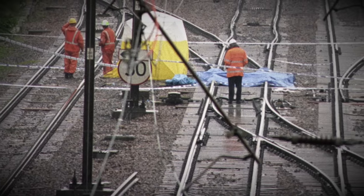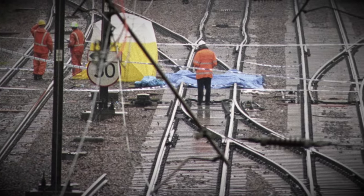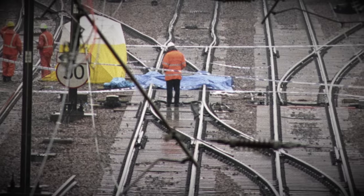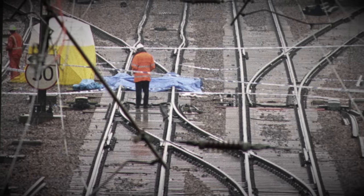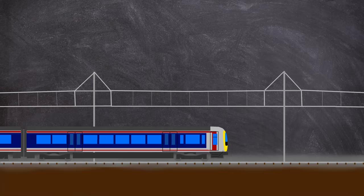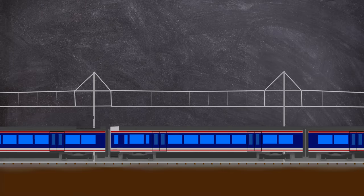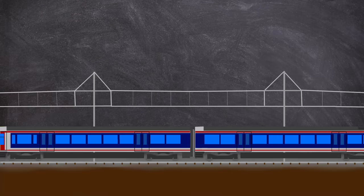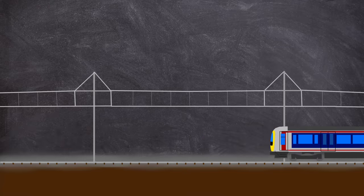So, let's start with the least credible. I should prefix this theory with, don't forget this is 2002, and terrorism was on a lot of people's minds. So, the engineering company in charge of maintenance of the point work in the area, called Jarvis Rail, would push out the theory of sabotage.